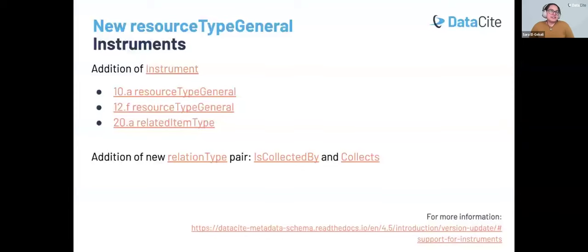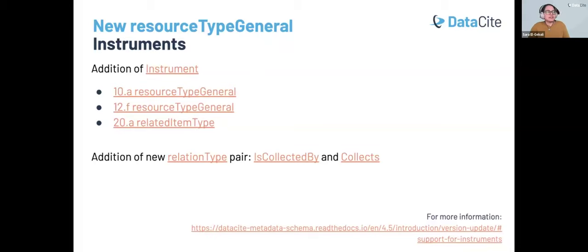I mentioned some resource type generals — and to that we added instrument support in 4.5. This new addition can be used in other instances where resource type general is used. It provides a standardized method for identifying and referencing individual physical devices. The goal is to provide repositories with a standard mechanism to identify and reference instruments — and when I say instruments, we mean the actual physical items used in research and data collection, not their digital descriptions or designs.